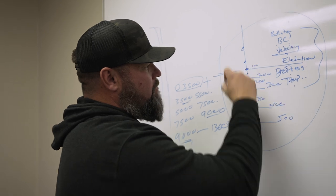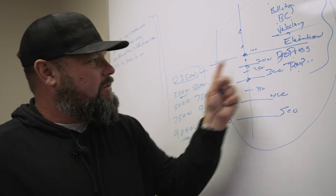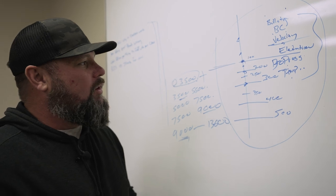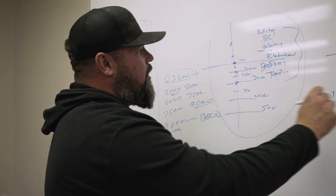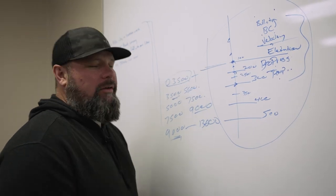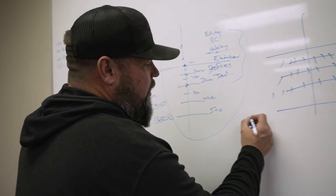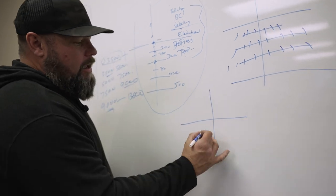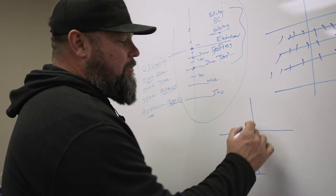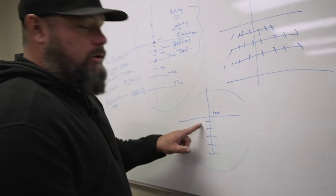There are so many variables to make this ballistic calculator in your scope work — those stadia lines that you think are dead on are only dead on for one bullet, one gun, one barrel twist, one distance, one temperature, one elevation, one velocity. What makes you a professional? A professional says, instead of getting a BDC, I'm going to get mils or MOA and I'm going to learn them.